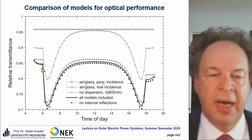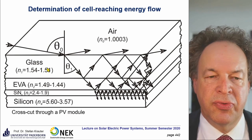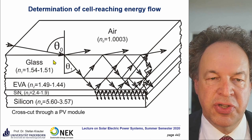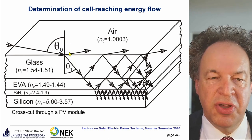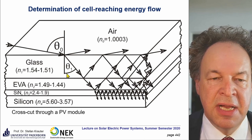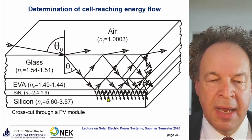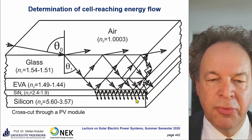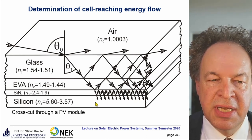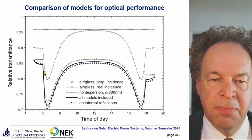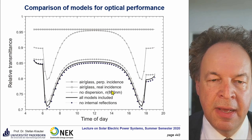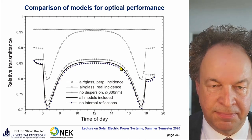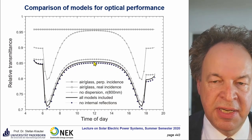A more advanced model considers all interfaces, not just air to glass. The bold line represents the irradiance that actually reaches the solar cell — the most realistically modeled result. We have losses of about 15% due to all interface effects. Comparing model variations: ignoring dispersion and using only the refractive index at 800 nanometers gives about half a percent overestimate. Ignoring internal reflections leads to a slight underestimation of cell-reaching energy flow, less than half a percent. The bold line with all modeling included gives the most accurate result.